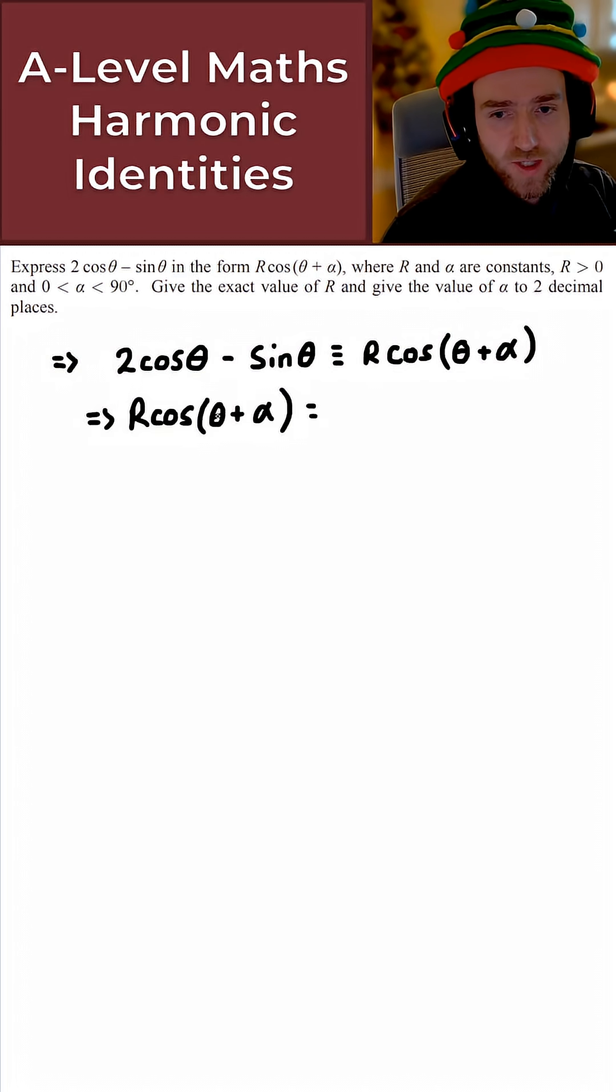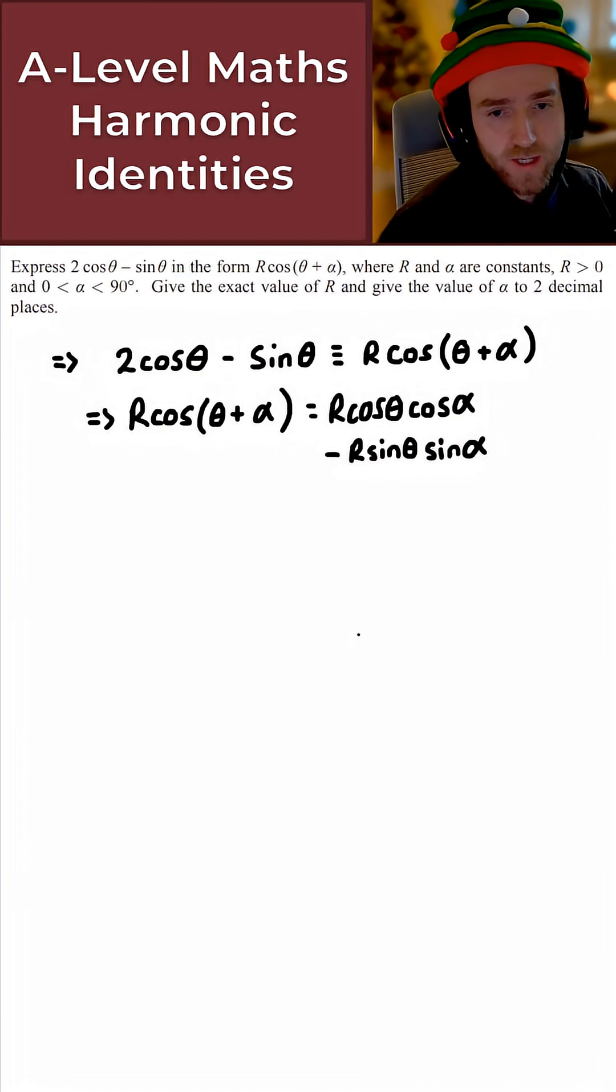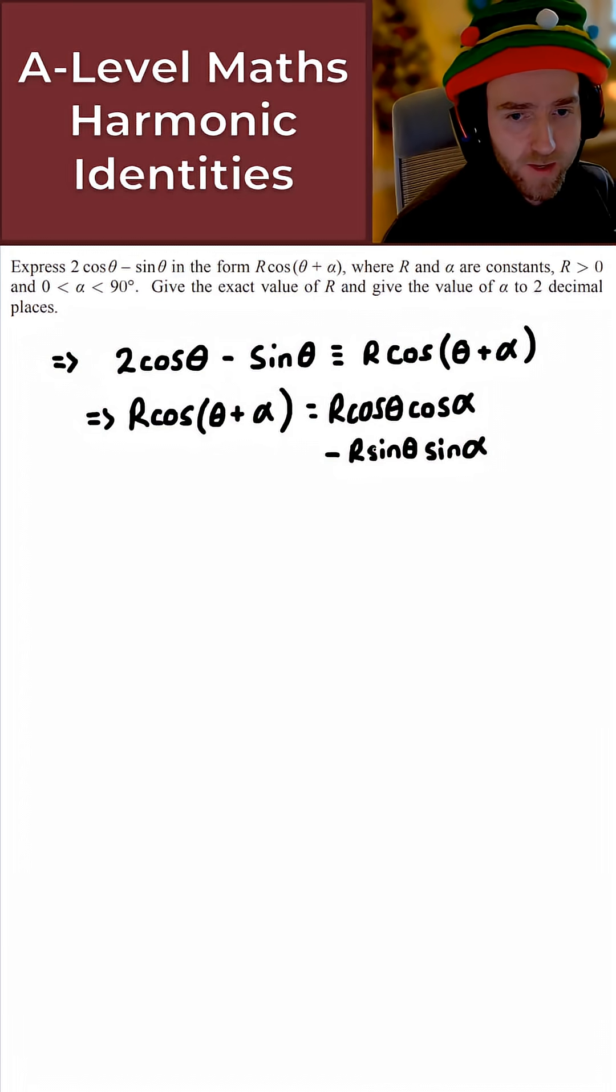So to begin with here then, let's just take R cos theta plus alpha and use the compound angle formula to express this in its expanded form. And what we get here then is the following. So unfortunately, I can't write this in one line, which would be nice, but there are quite limitations of recording this in a short format. But basically we get R cos theta cos alpha minus R sine theta sine alpha. So let's just put this equal to then 2 cos theta minus sine theta.